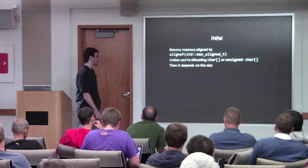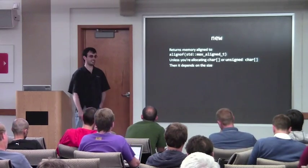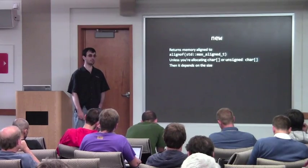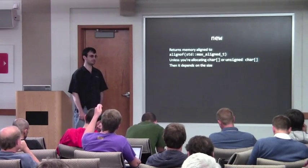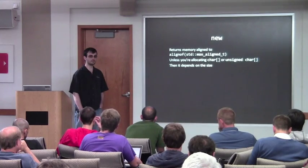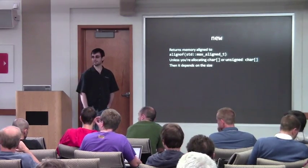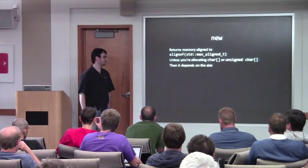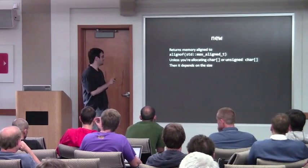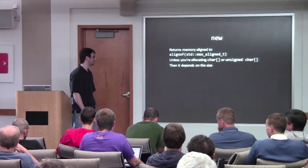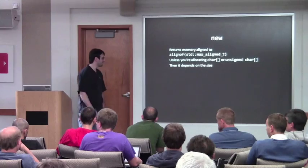For example, if you're allocating a char array of size one, that can have an alignment of one. Q: What about `signed char` array? A: It specifically says `char` and `unsigned char` in C++11. However, the current working draft includes `signed char` as well — so that's a fix added since the FDIS.